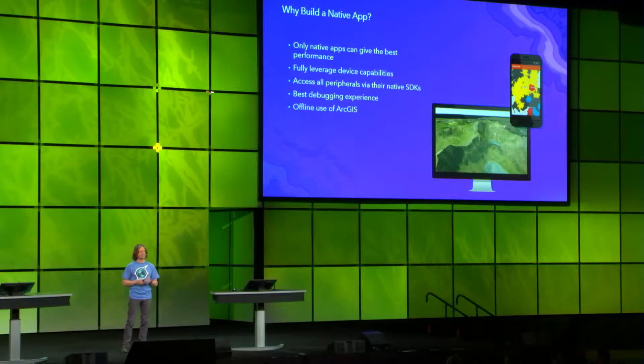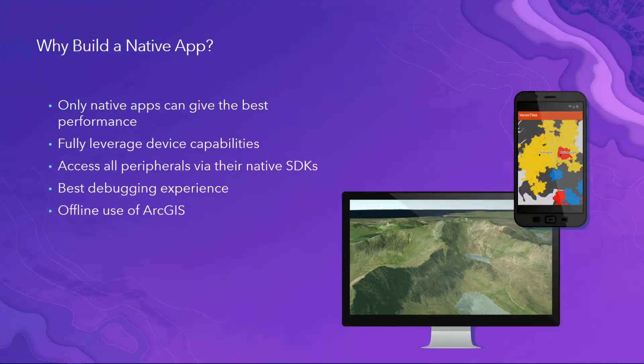You saw some fantastic web applications running on mobile devices using our JavaScript API. And for many use cases, that will be a fantastic opportunity for you. But some of the reasons why you want to go native — the first one is performance. With a native SDK, there's nothing that gets you closer to the silicon of the device, so you can maximize the performance within your application.